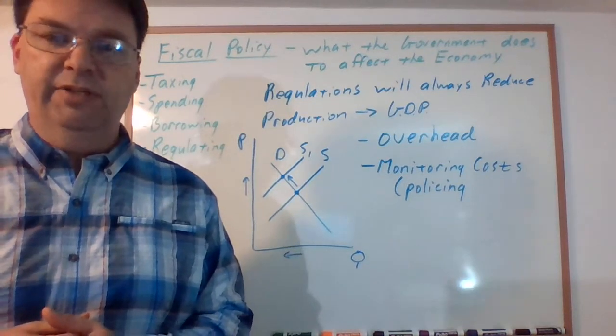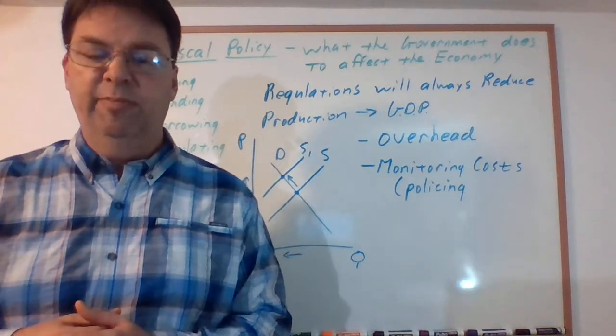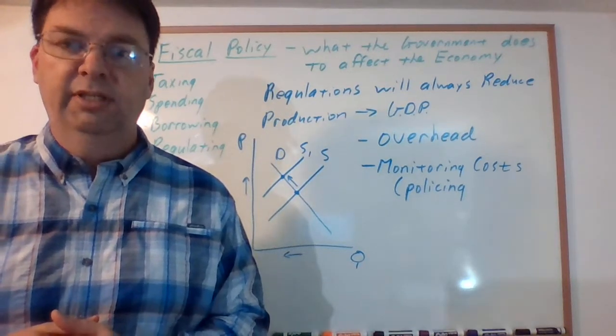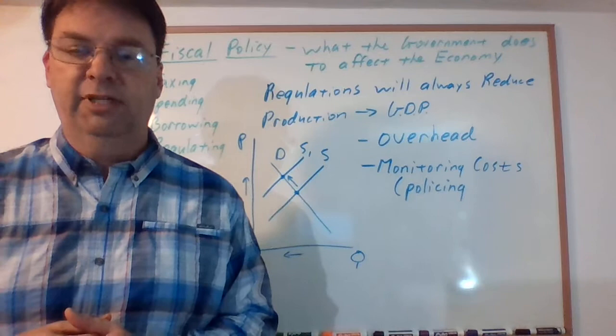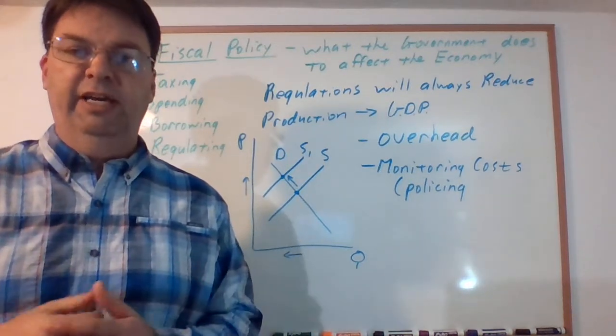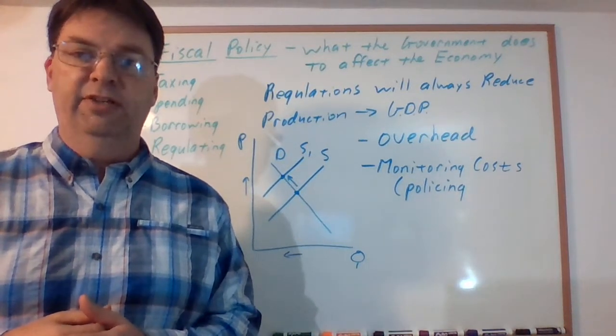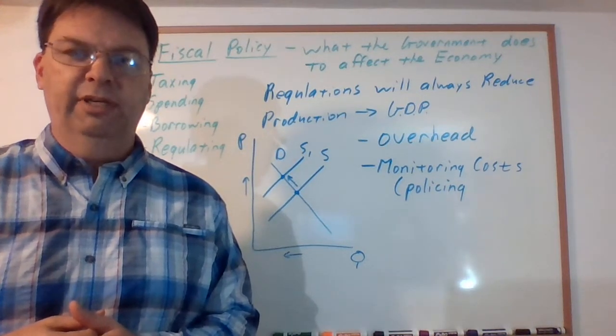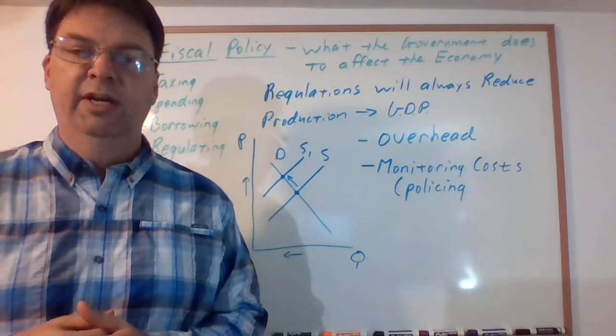So the answer for any bureaucracy when asked what can we do to make this better, they'll always say give us more money, give us more power. Because they believe in what they're doing, and the answer to getting a better result is them always doing more. They very rarely consider doing less.